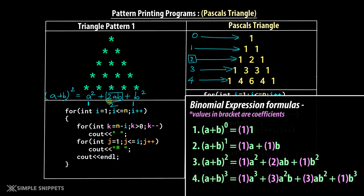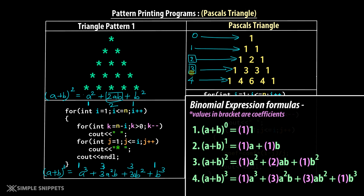Similarly, for a binomial expression (a + b)³ = a³ + 3a²b + 3ab² + b³. The coefficients are 1, 3, 3, 1. And if you look at the fourth row — depicted by number 3 — you have these same coefficients: 1, 3, 3, 1.